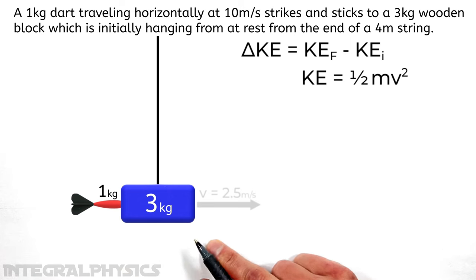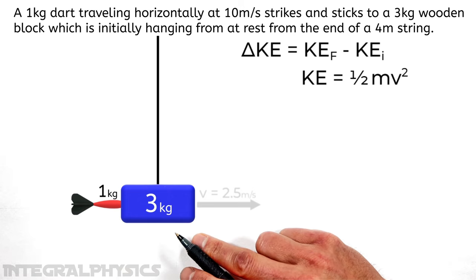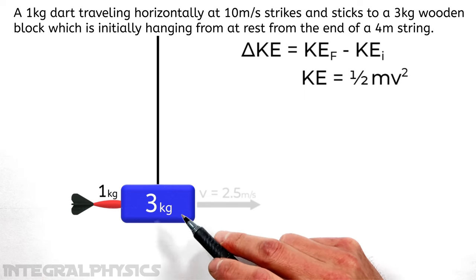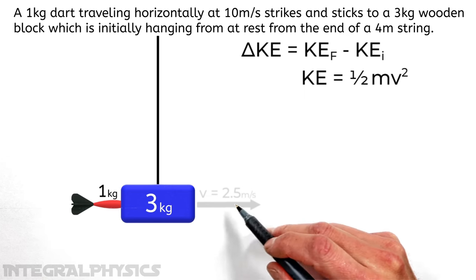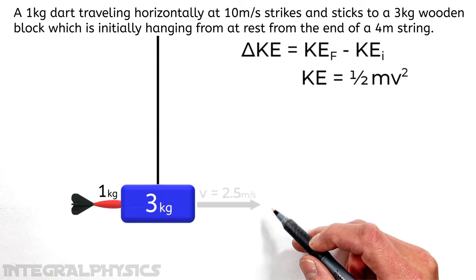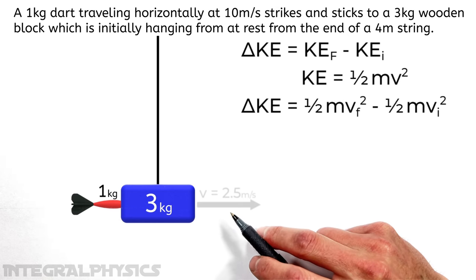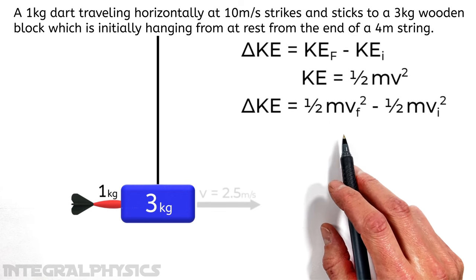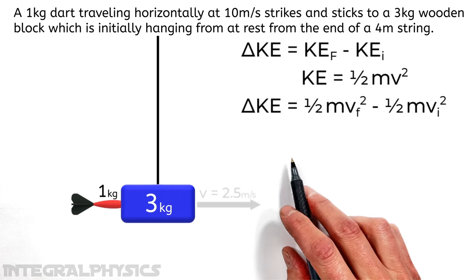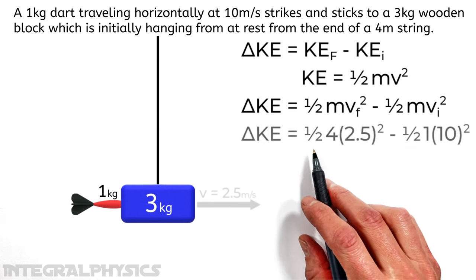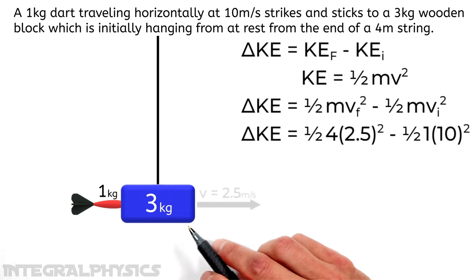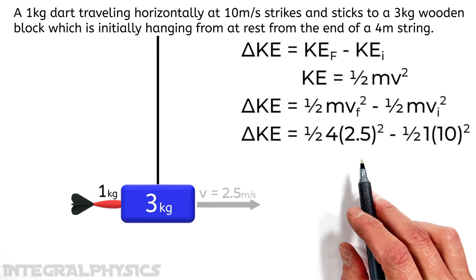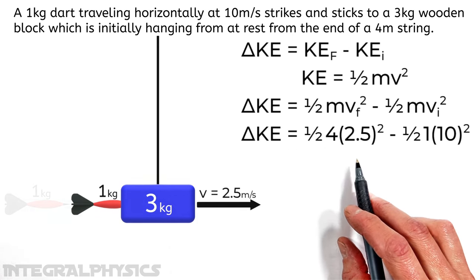Now kinetic energy is given by the equation 1 half mass times velocity squared. So this dart before it struck the block had some kinetic energy. And after the dart becomes embedded in the block, both the dart and block moving together are also going to have kinetic energy. Now we already solved for the velocity of the dart and block immediately after this collision. That's what we're calling the final velocity over here. So our change in kinetic energy is going to be 1 half times 4. That's the sum of these two masses, because that's how much mass is moving after the collision. And that mass is moving along at 2.5 meters per second.